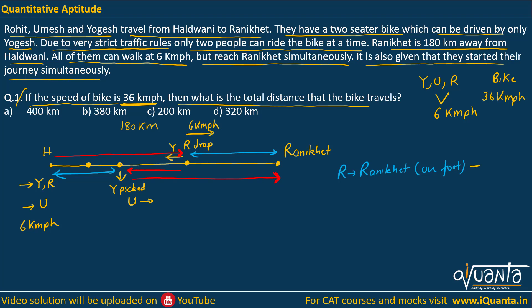Let us assume Rohit walked x kilometers on foot towards Ranikhet, and Umesh walked y kilometers on foot. The total distance is 180 km, so the gap between Rohit's drop point and Umesh's pickup point is 180 − x − y. Equating times: Rohit walks x km at 6 kmph, while Yogesh travels back (180 − x − y) km by bike at 36 kmph, then forward (180 − y) km by bike to Ranikhet, divided by 36.